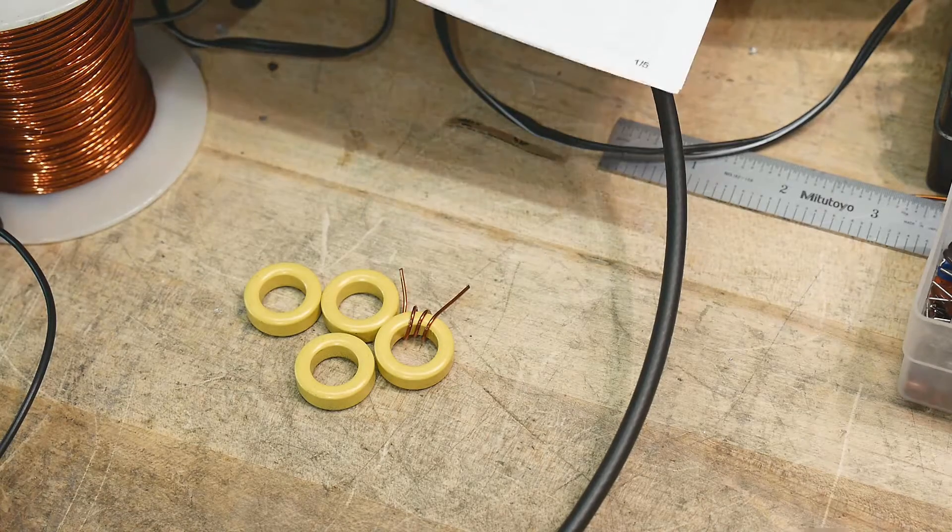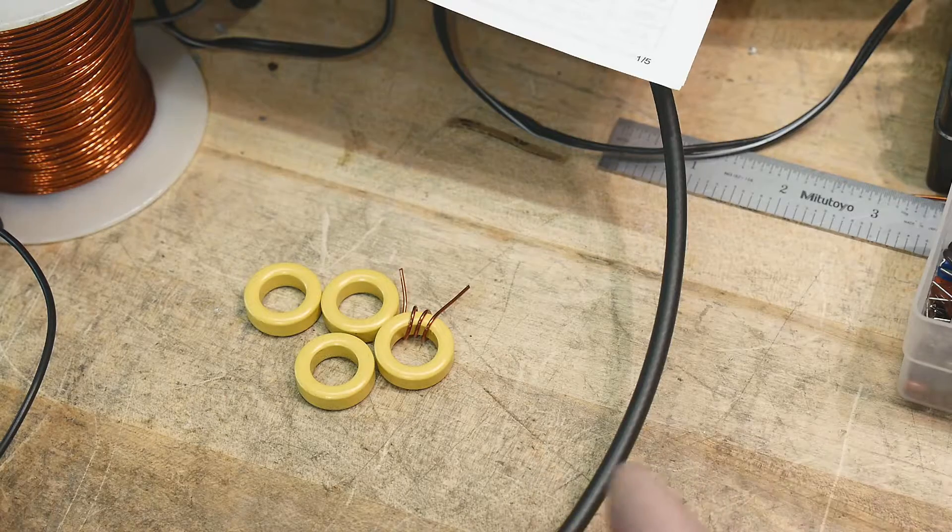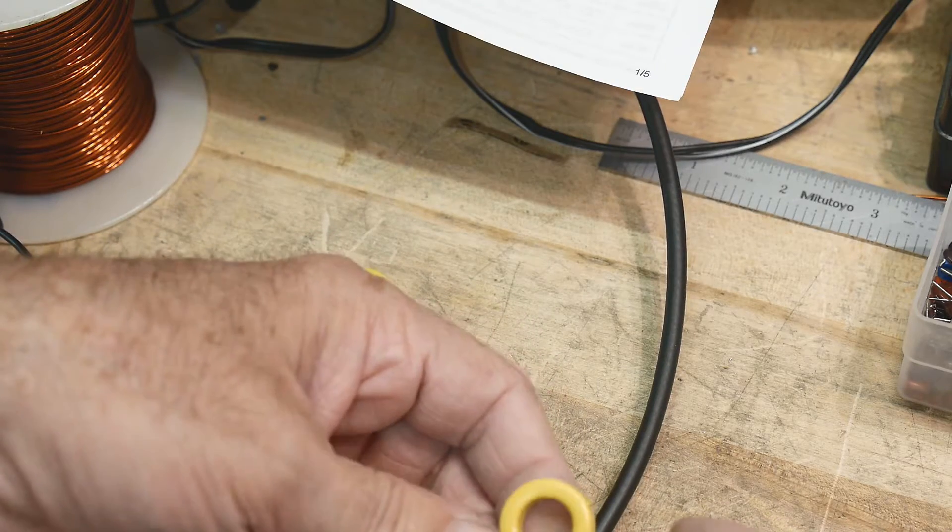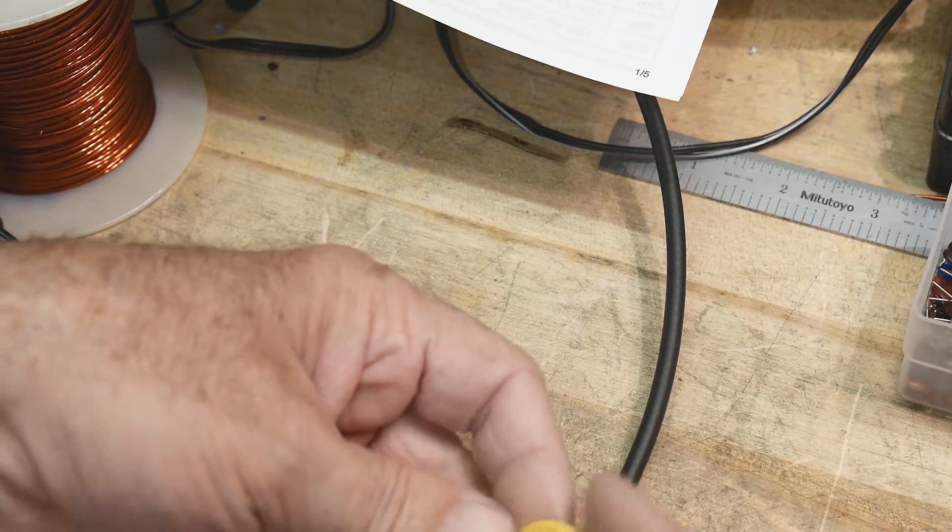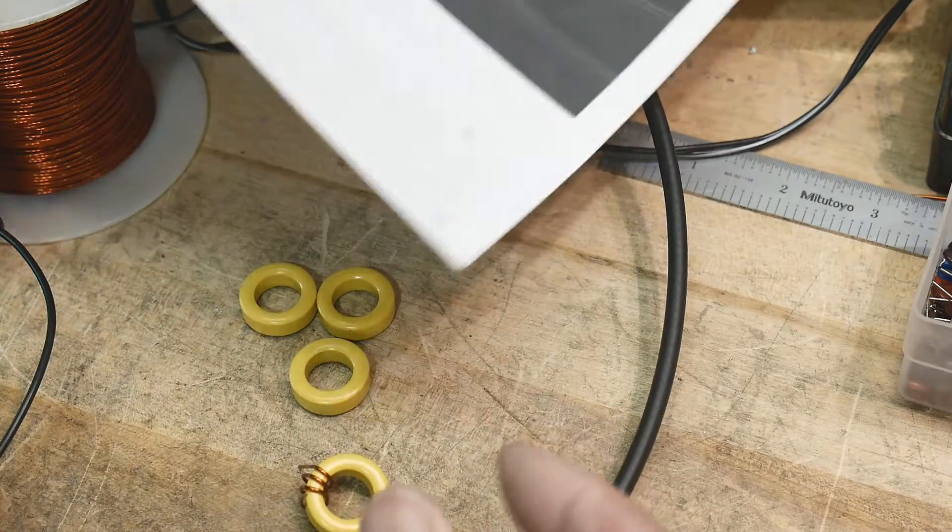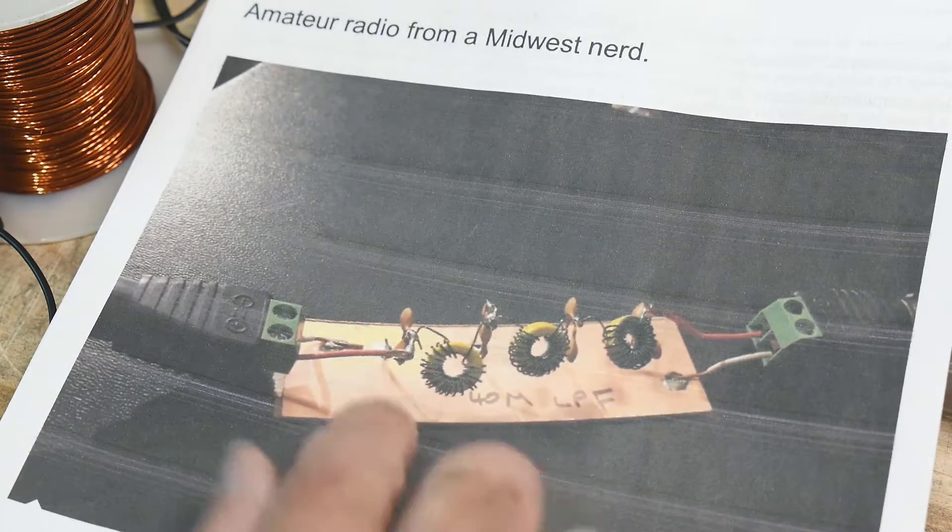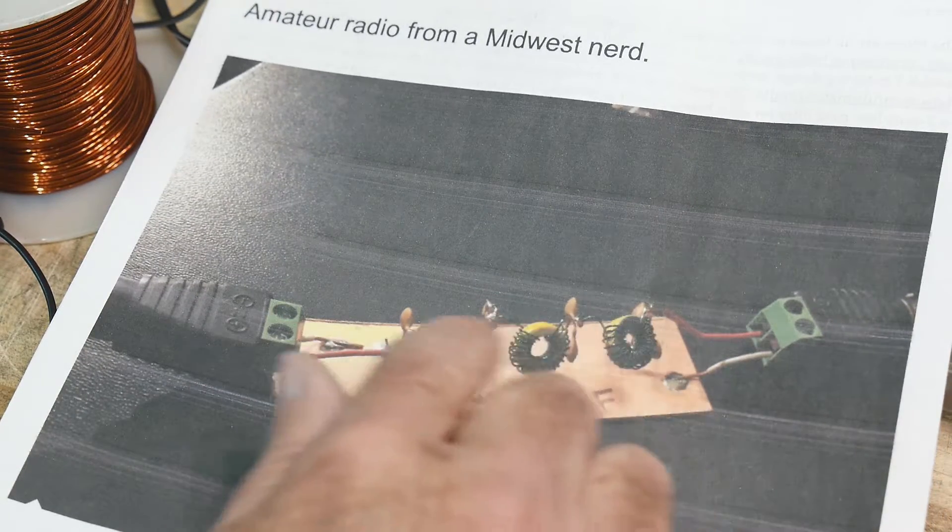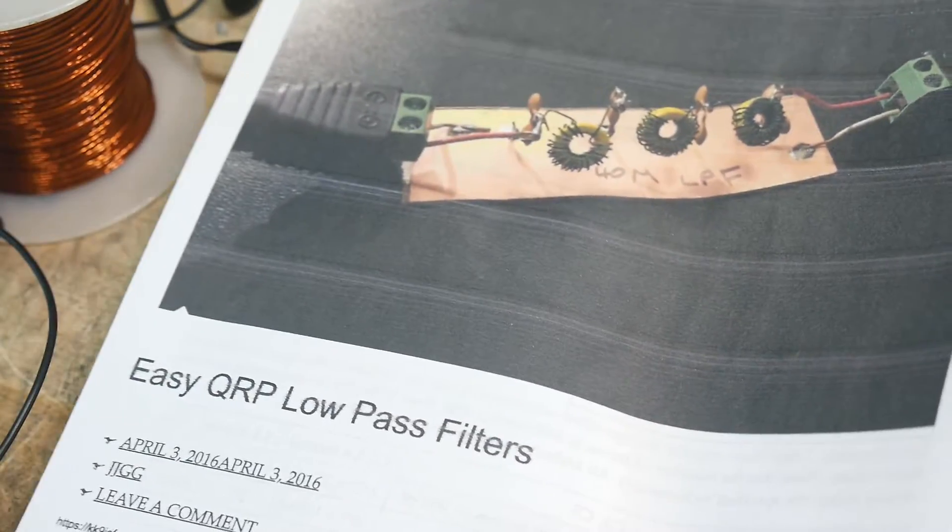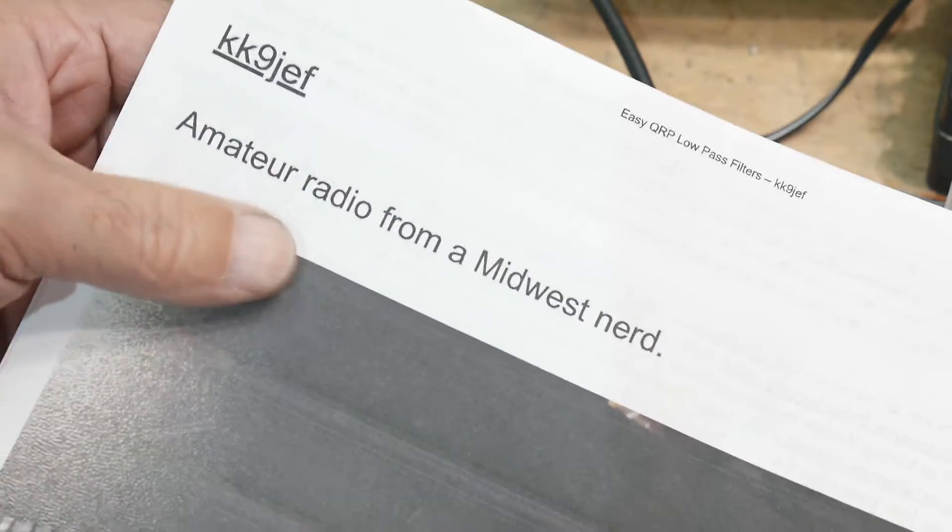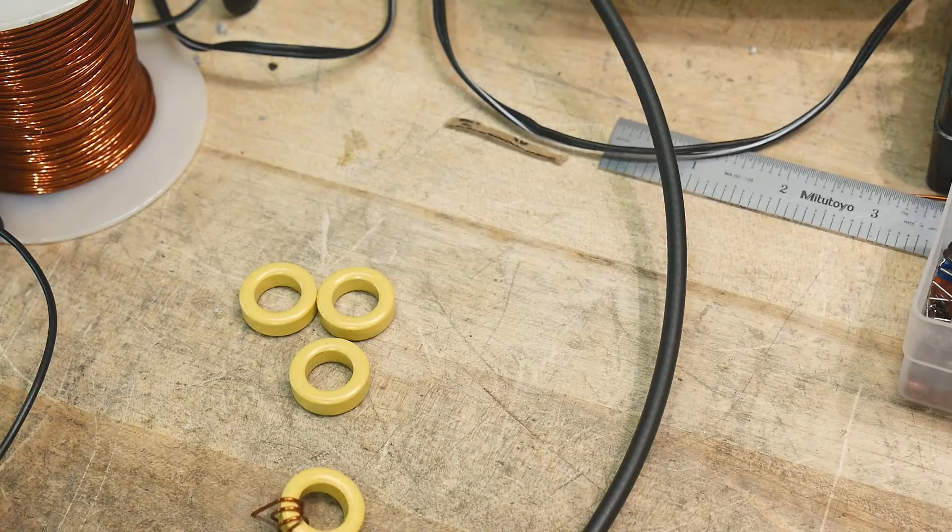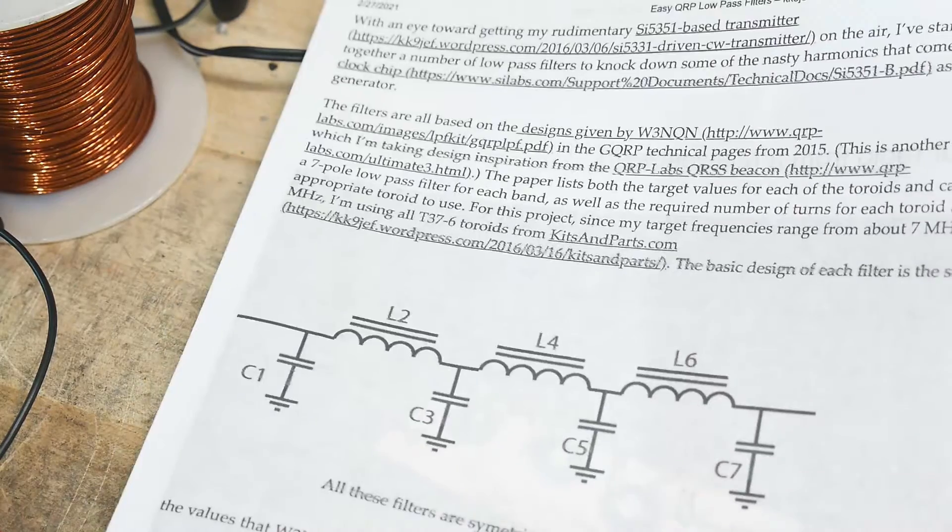There's tons of articles if you go on the internet about how many wines does it take to make a certain microhenry inductance and there's a bunch of filters that people have shown how to use at particular frequencies and stuff. Because I'm lazy I always just copy everybody else. So here's somebody built a little filter. It's a three toroid and four capacitor filter, it says it's an easy filter. So give this guy credit, KK9JEF amateur radio from midwest nerd. So this is a filter that he built.